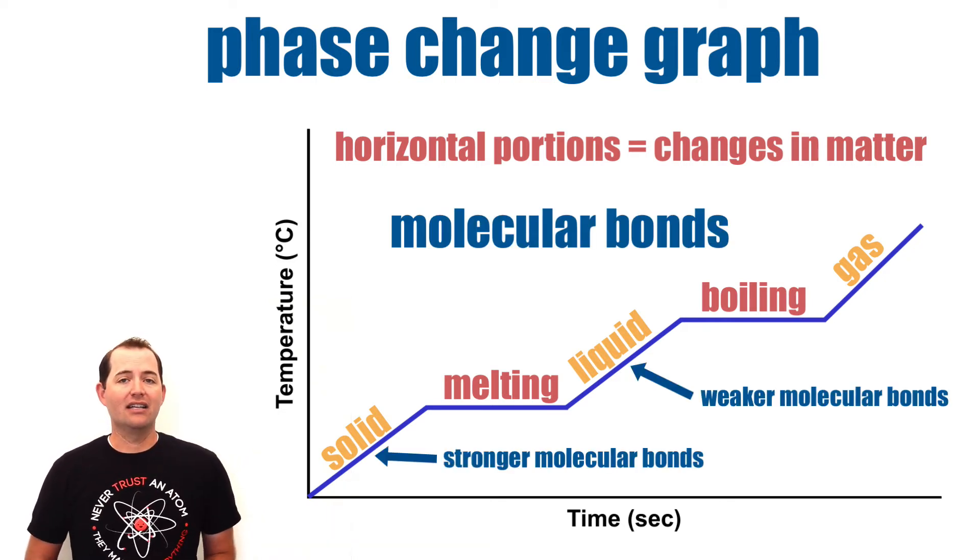In the case of melting, the stronger molecular bonds in the solid are being broken, and following the phase change, the liquid has weaker molecular bonds.